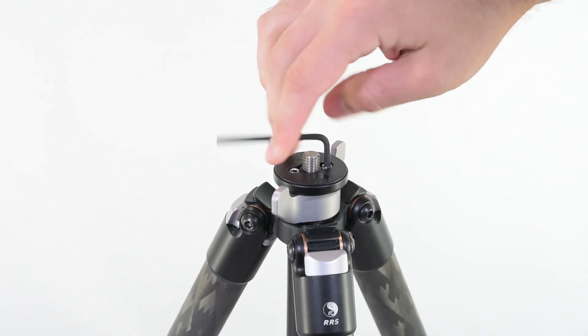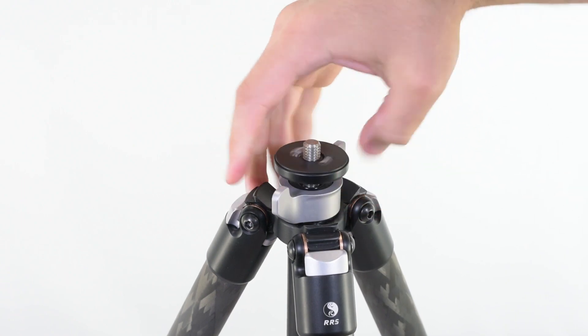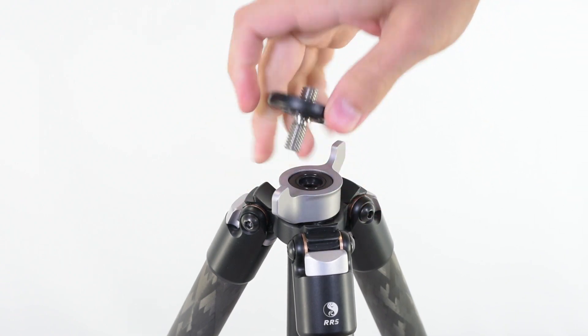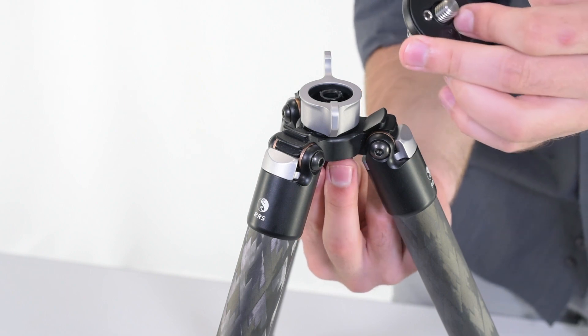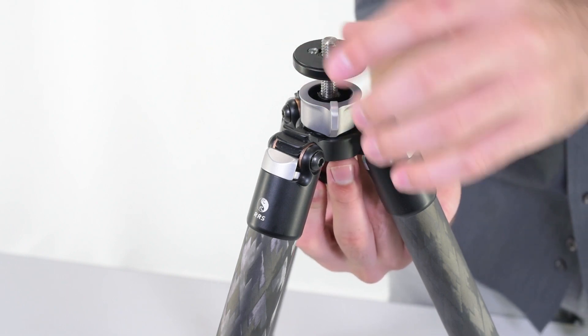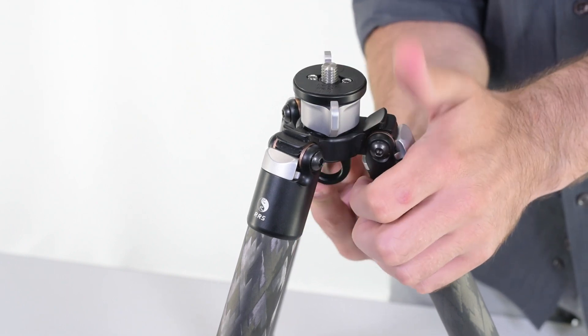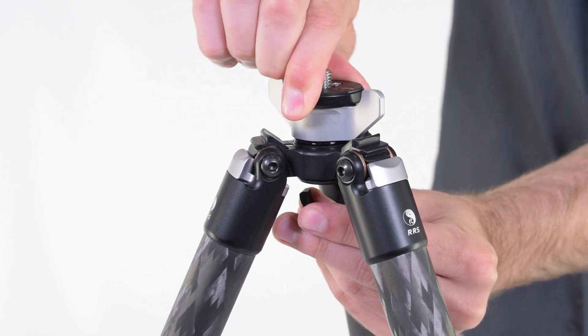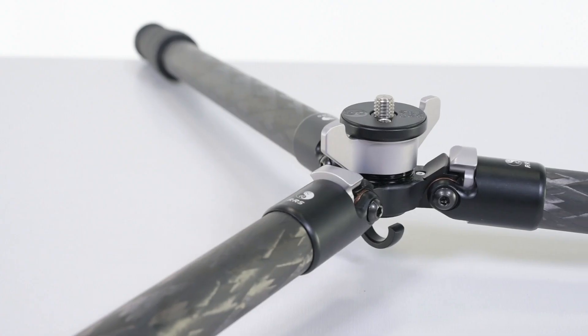If you loosen the set screws in the platform, you can remove the platform and re-thread it into the upper section of the weight hook. The two pieces combined will give you a very minimal profile and allow you to fully splay the tripod legs to get as low to the ground as possible.